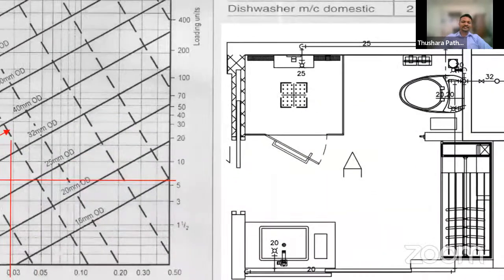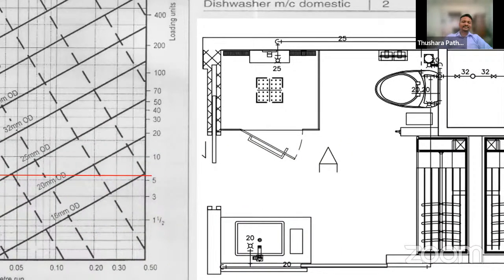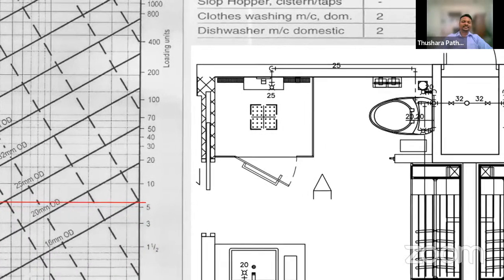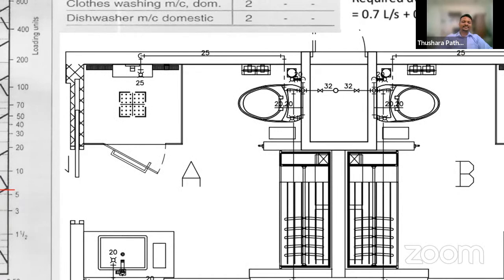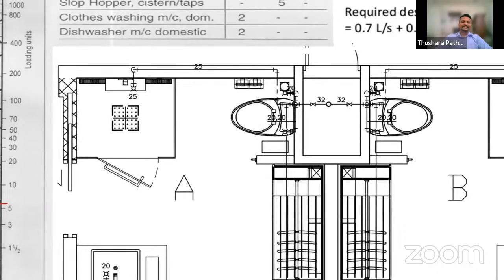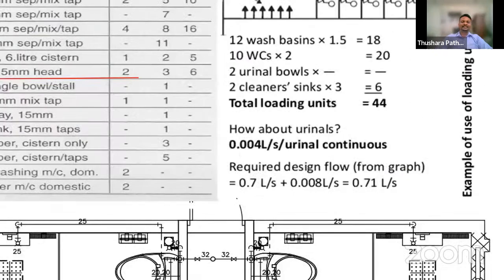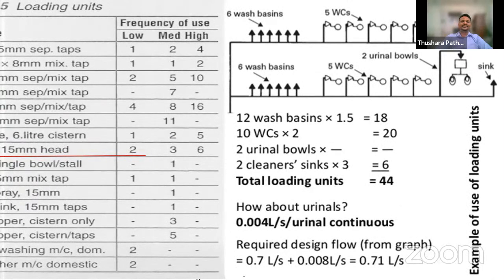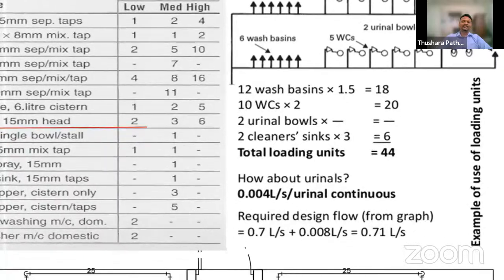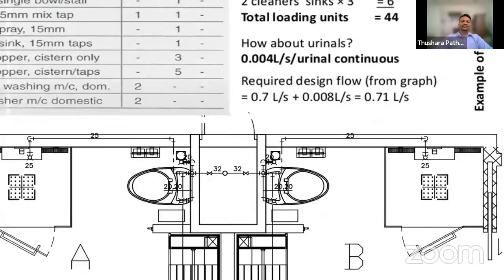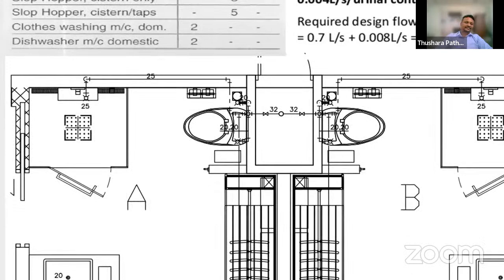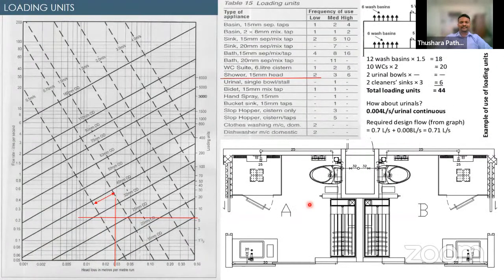For a guest bathroom, a 25mm pipe size is sufficient for a shower. Once all branch pipes are sized in this manner, we can size the distribution pipe by adding all the loading units of appliances connected to a particular branch, reading the flow rate from the graph, and calculating the pipe size. Similarly, for transfer or booster pump head estimation, we sum the elevation difference and the pump constant multiplied by Q², plot the system curve, then overlay manufacturer pump curves to find the pump operating point where the two curves intersect, selecting the best pump based on efficiency and power consumption.